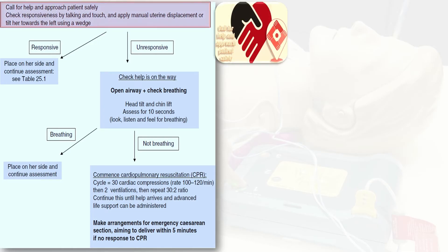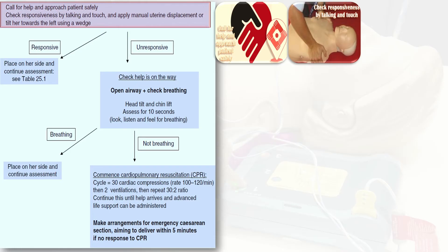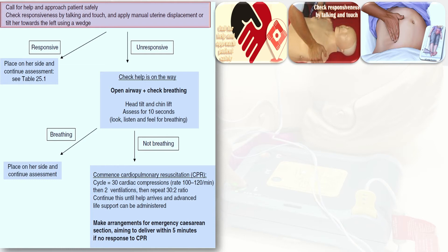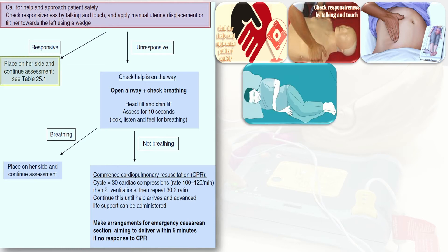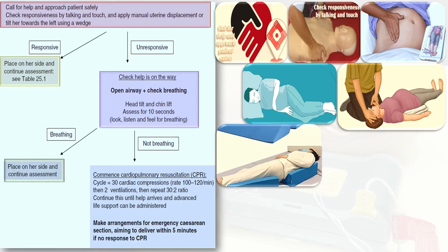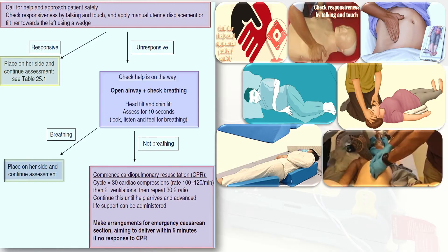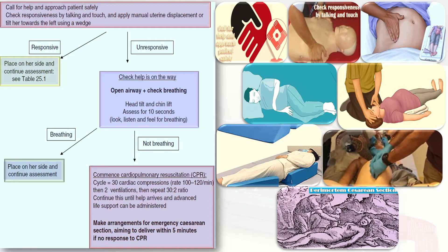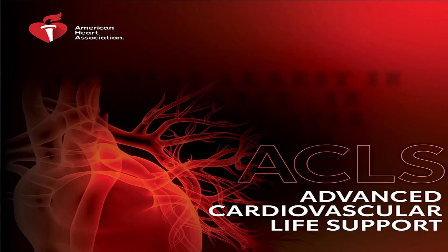To summarize the BLS algorithm: call for help, approach safely, check responsiveness by talking and touching, and apply manual uterine displacement or tilt to the left using a wedge. If responsive, place on her side and continue assessment. If unresponsive, open airway with head tilt and chin lift, assess breathing for 10 seconds. If no breathing, commence CPR at 30 compressions to 2 ventilations at 100 to 120 per minute. Make arrangements for emergency cesarean section aiming to deliver within five minutes if no response to CPR.